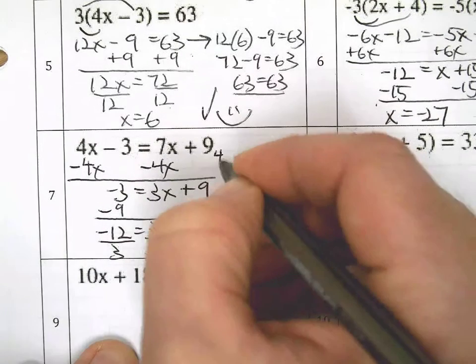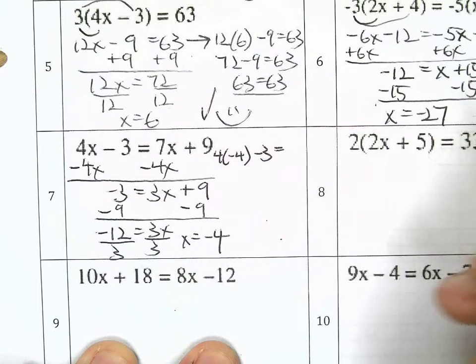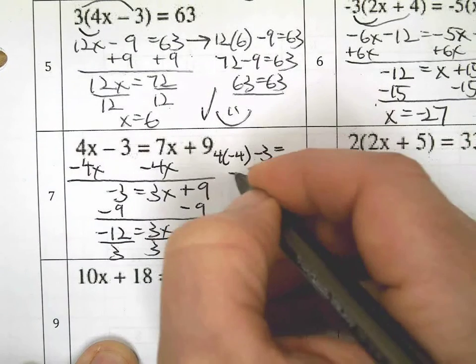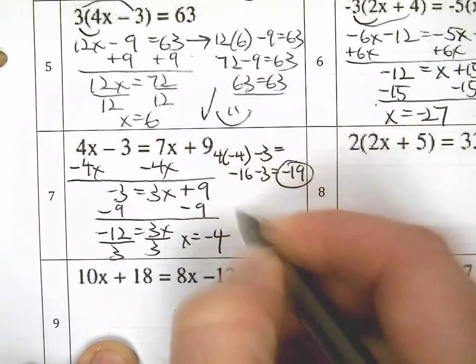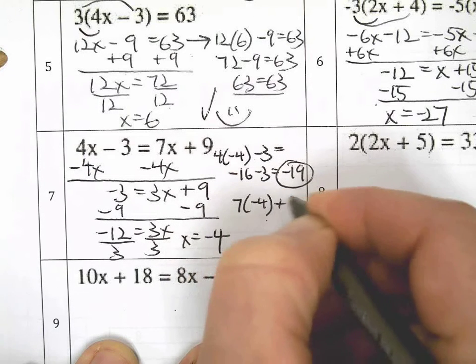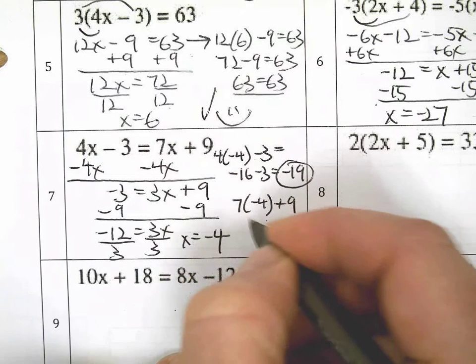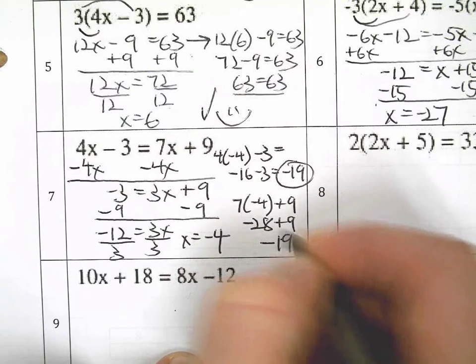Let's go ahead and sneak a proof in here on this one. 4 times negative 4 minus 3. That's the left side of this equation, by the way. That's negative 16 minus 3 is negative 19. I'm going to do the right side separately. 7 times negative 4 plus 9.